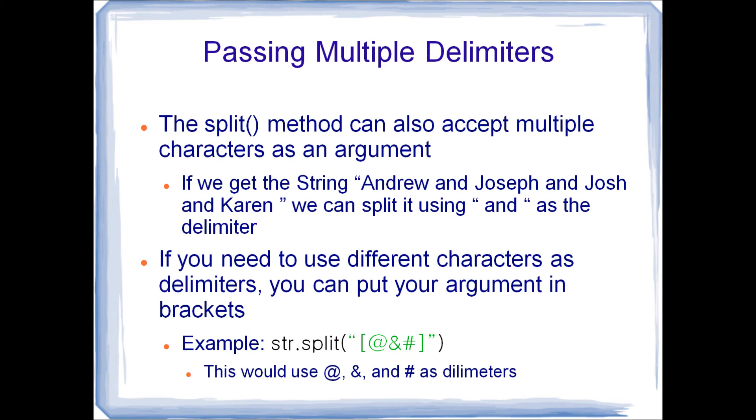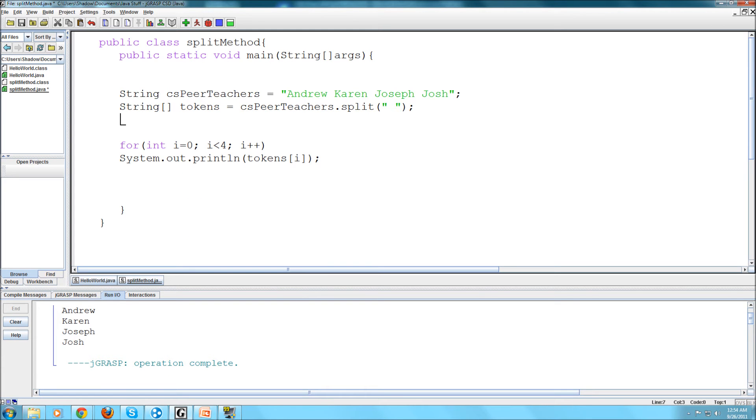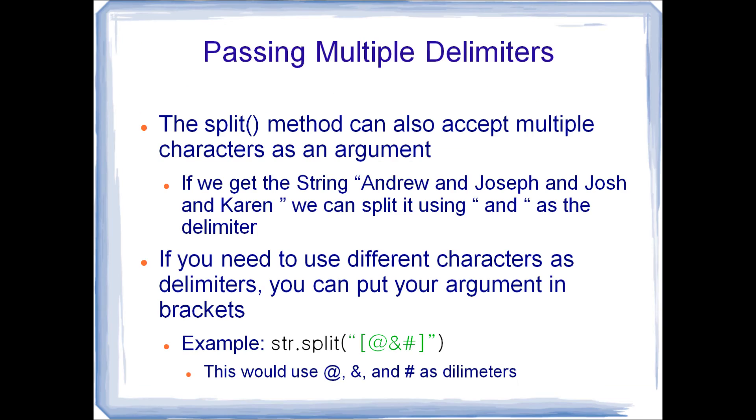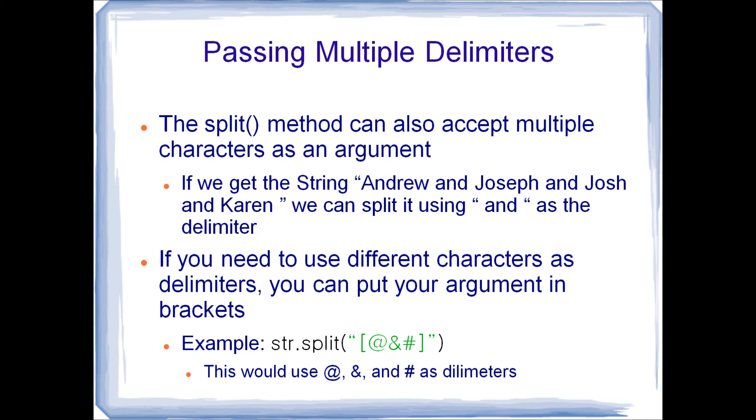The split method can also accept multiple characters as an argument. For example, if we get the string Andrew, and Joseph, and Josh, and Karen, we can split it using and as the delimiter. Let's try that. Instead of just having Andrew, Karen, and Joseph, and Josh in our CSPeerTeachers string, let's add Andrew, and Karen, and Joseph, and Josh. So, as our split delimiter, we can put and. And it should take out the ands and just put our names in each of the string tokens. So, let's give it a try. It should print out all four of our names. There we go.